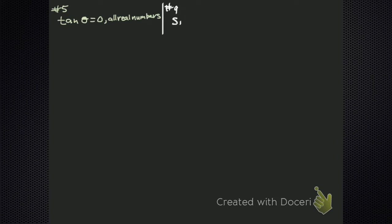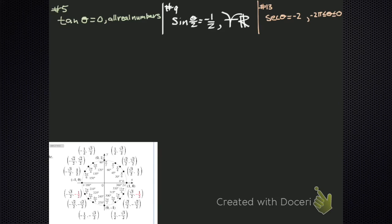Solving trigonometric equations. This is level one where they're not super crazy, but there's a little crazy in here. I have three examples. I just throw my unit circle down there — we're going to need it later. So this first one: the tangent of theta is equal to zero, and they want it for all the real numbers.